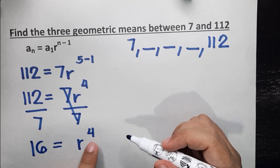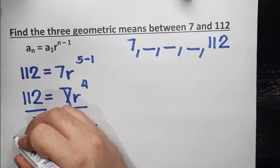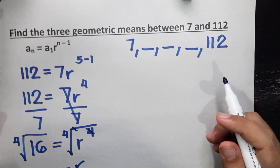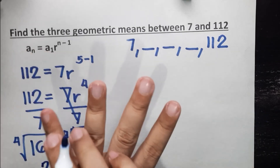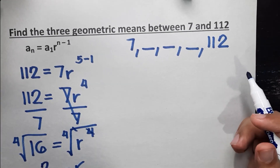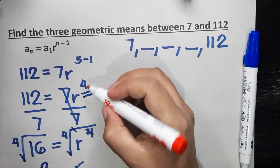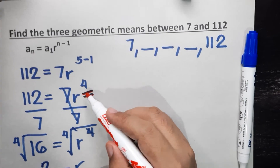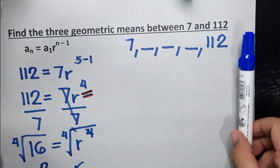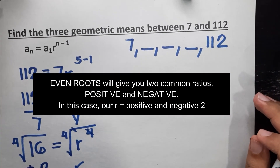We are looking for the value of r, so we eliminate the fourth power by getting the fourth root of both sides. The fourth root of 16 is 2, because 2 times 2 times 2 times 2 equals 16. Now this is the interesting part: if after subtracting the exponent value is an even number — 2, 4, 6, 8, 10, and so on — you'll have two common ratios, a positive and negative value. So which means you will also have two answers in the sequence.